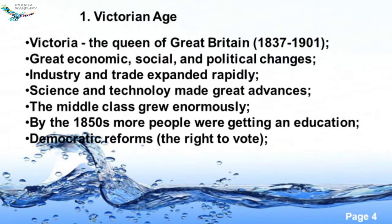It is called the Victorian age because Victoria became the queen of Great Britain and it was the longest period. For this period, we have the following characteristics like great economic, social, and political changes. At this period, industry and trade expanded rapidly and the period is specified with science and technology with great advances in these spheres.